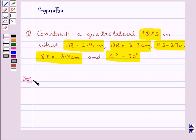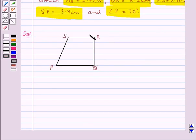First we will draw a rough sketch of the quadrilateral PQRS. This is the rough sketch of the quadrilateral PQRS where we have PQ is 2.9 cm, QR is 3.2 cm, RS is 2.7 cm, SP is 3.4 cm and angle P is 70 degrees. Now we will construct this quadrilateral step by step.